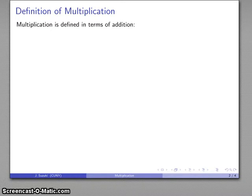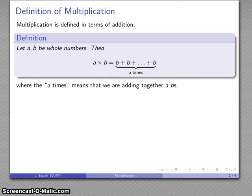We're going to define multiplication in terms of repeated addition. So we'll give this definition here. If I have two whole numbers A and B, then I'm going to define the product A times B to be, and here's where the notation is a little bit strange, this is B plus itself and so on, A times.